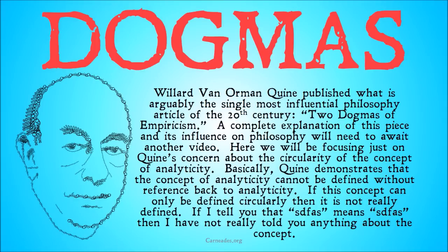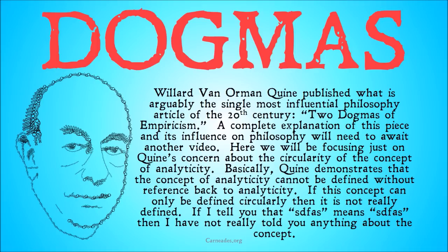Broadly, Willard van Orman Quine published what is arguably the single most influential philosophy article of the 20th century, Two Dogmas of Empiricism. A complete explanation of this piece and its influence on philosophy will need to await another video. Here we're going to be focusing just on Quine's concern about the circularity of the concept of analyticity — that was one of the two dogmas he was talking about, the idea of the analytic-synthetic distinction. Basically, Quine demonstrates that the concept of analyticity cannot be defined without reference back to analyticity itself. If this concept can only be defined circularly, then it's not really defined. If I tell you that 'cidfus' means 'cidfus', then I've not really told you anything about the concept, because I used that word in my definition for that word. So if we can only define something circularly, we probably don't want it in our ontology.